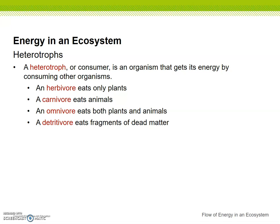Okay, let's look at these words here. We have herbivore, carnivore, omnivore, and detritivore. These are the four types of heterotrophs. Herbivores eat only plants. Carnivores only eat animals. Omnivores eat both plants and animals. And then you have a detritivore, which eats fragments of dead matter — think fungus and things that eat decaying, dead, rotted things.